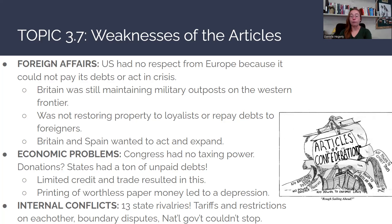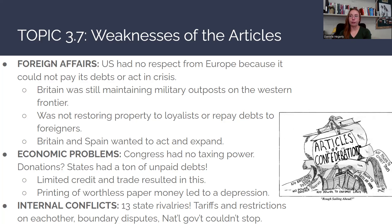There were also a number of internal conflicts, essentially 13 state rivalries where everybody thought they were the best. Tariffs were put in place between states — if you lived in New York, there might be a tariff on goods from Georgia. There were also boundary disputes: states on shared borders would dispute how much land they had, and the federal government couldn't act as a middleman. The national government really couldn't stop much of the conflict happening between these 13 individual states.